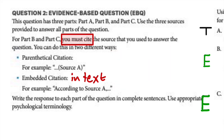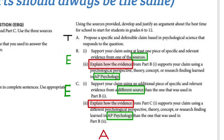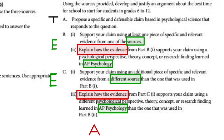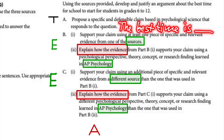So how does this play out in a question? Using the three sources, develop and justify an argument about the best time for school to start for students in grades 6 to 12. Based on the articles you're about to read, what's the best time to start school for middle school and high schoolers? With T, you need to make a claim — 'the best time is...' — and then give that specific claim.